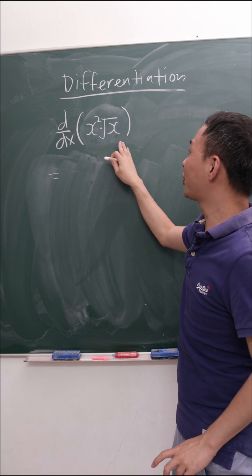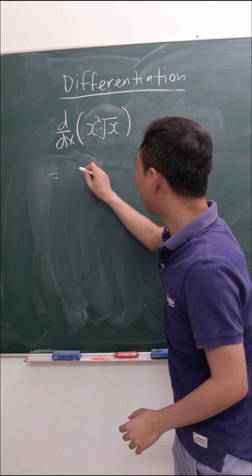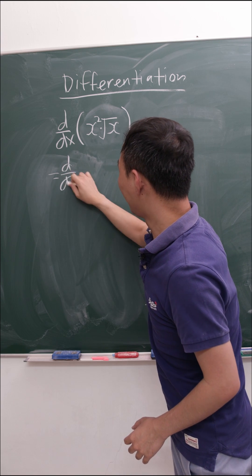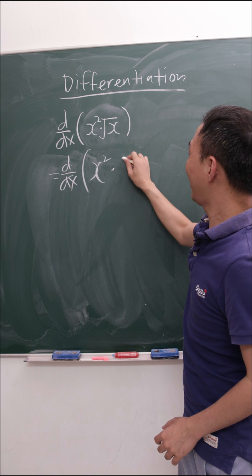Because this is x squared, this is x power of half, and both are multiplied. We learned this in indices already, right? This means x squared multiplied by x power of half.